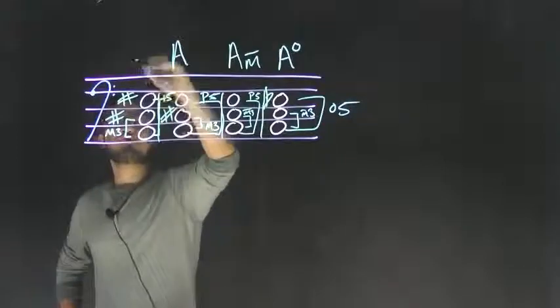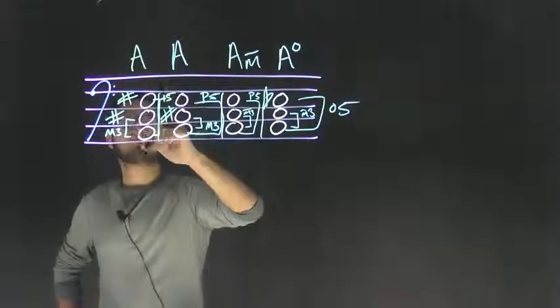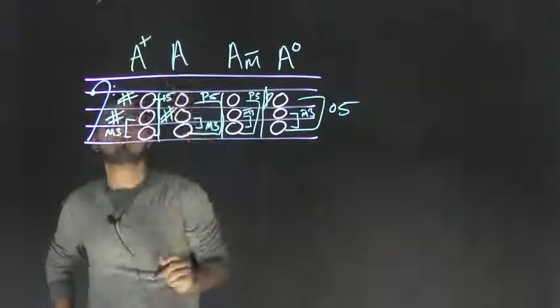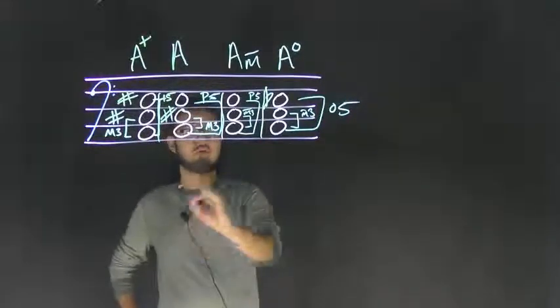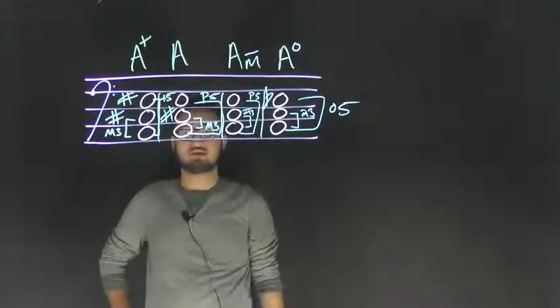Now that labeling would be A, which again is the root. And then we just draw our augmented symbol. And that is the differences between the four different triads and how you label them with lead sheets.